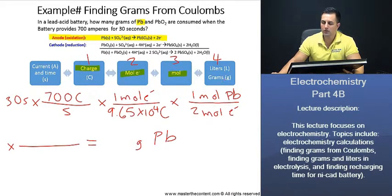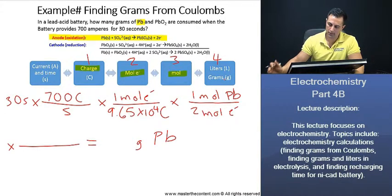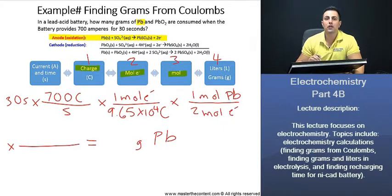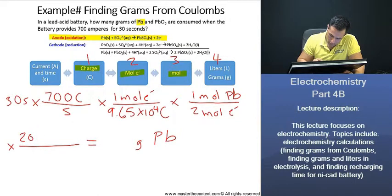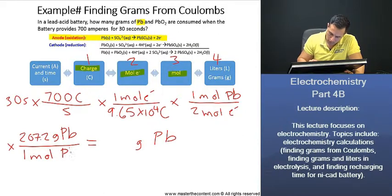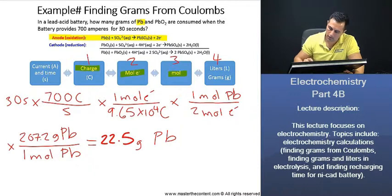And then lastly, our last conversion here, it's always just going to be your molar mass. And if you recall, or you can take a look at your periodic table, you'll find that your molar mass for lead is going to be 207 grams per mole. And once you go ahead and equate this, you will end up with 22.5 grams of lead.